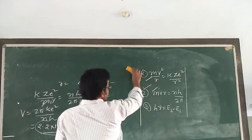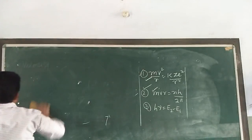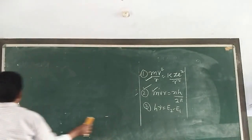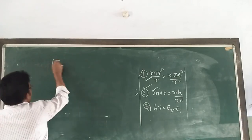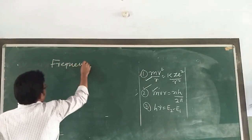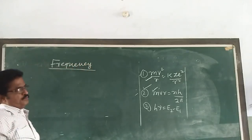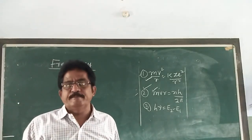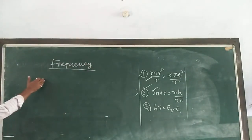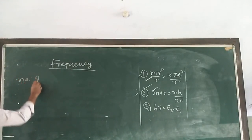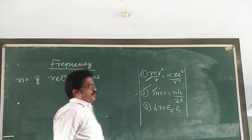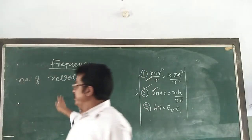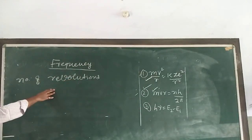Now the next thing we are going to see is frequency — the frequency of electrons in Bohr's stationary orbit. Frequency is defined as the number of revolutions completed per second by the electron in a stationary orbit around the nucleus.